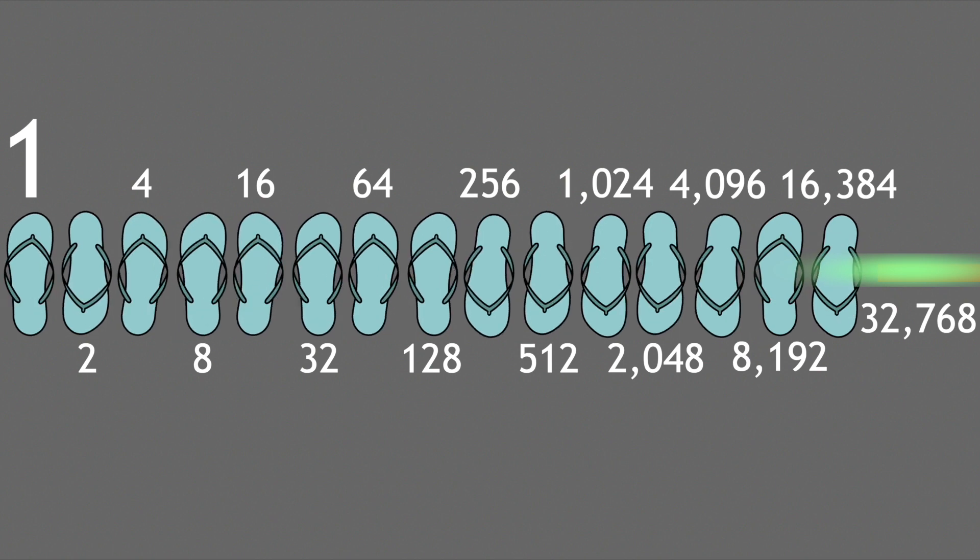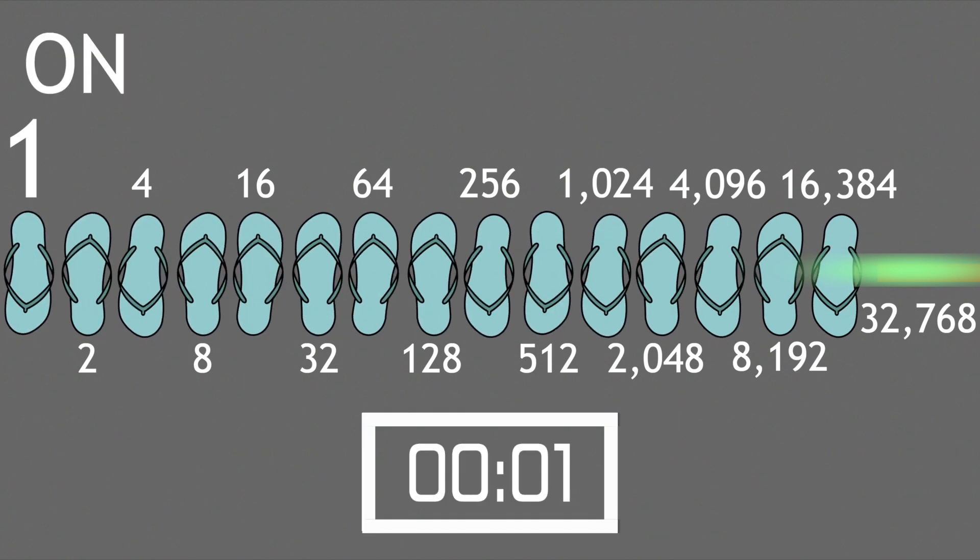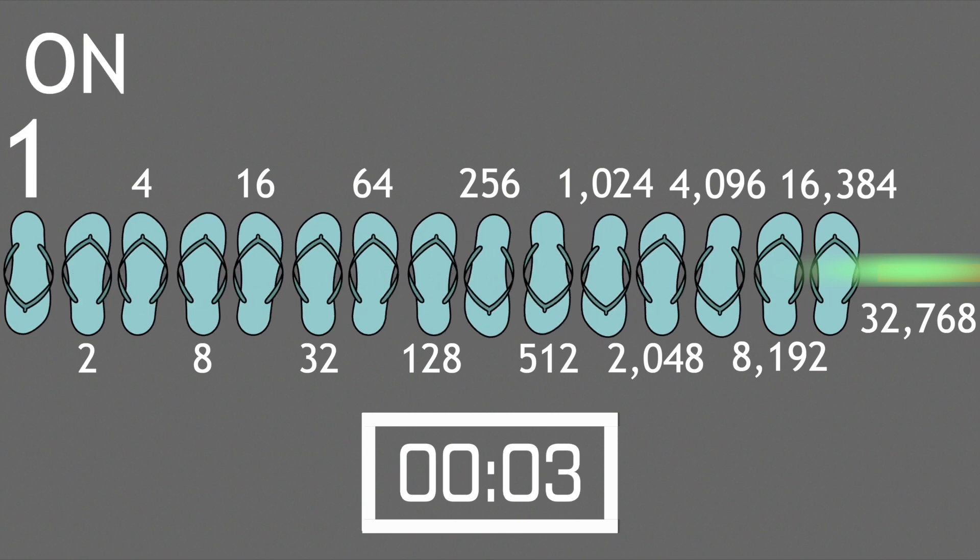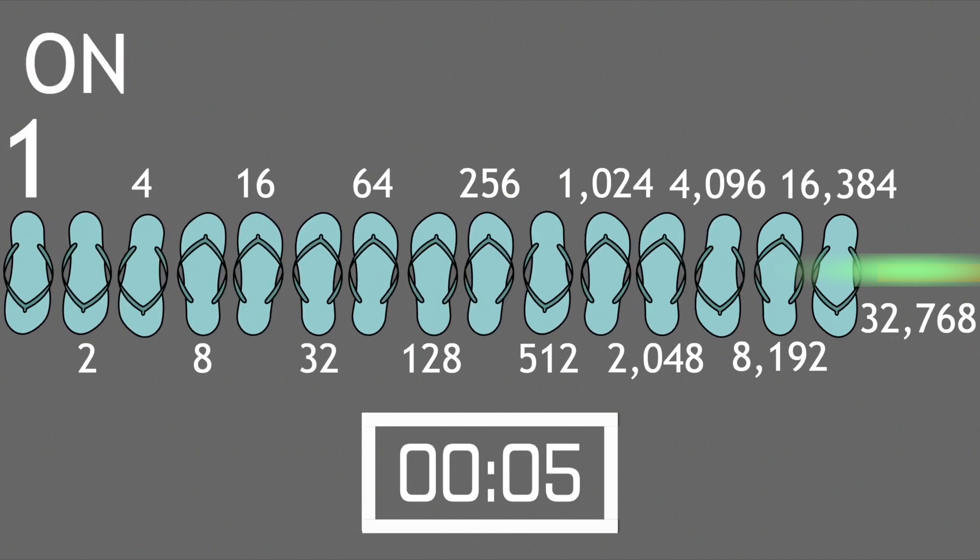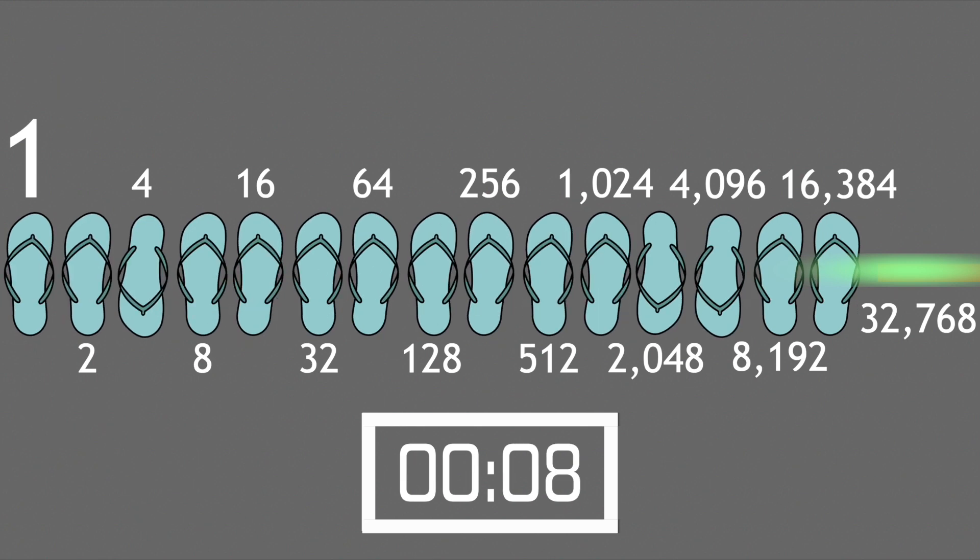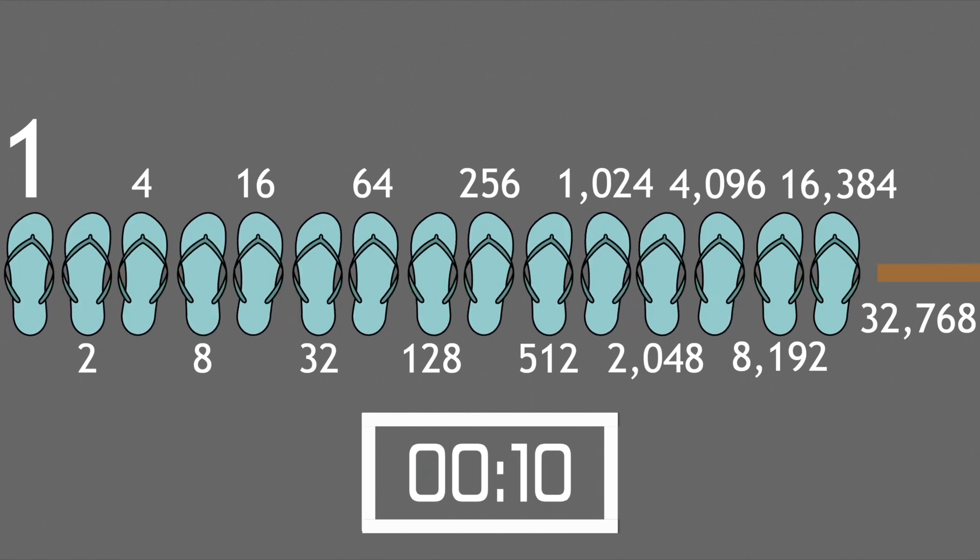That last flip-flop is turning on one time per second. And that one on per second can either power the ticking of a clock through the use of a step motor, or it can directly power a digital display. And that's how a clock works. That's how a clock keeps track of every second that passes.